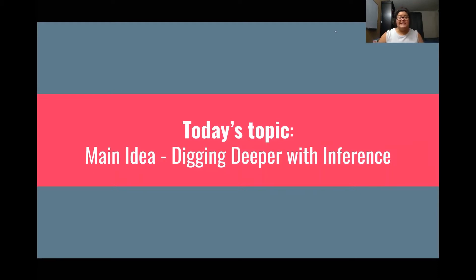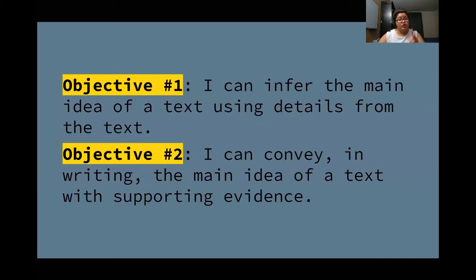Today's topic is working on main idea a little more, and we're going to dig deeper using inferences. We have two objectives today. Our first one is: I can infer the main idea of a text using details from the text. And our second objective is: I can convey in writing the main idea of a text with supporting evidence. We're going to work to do both of those things today.